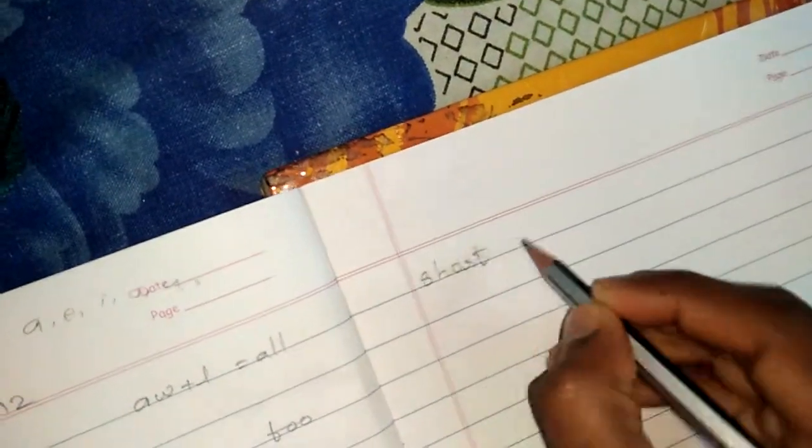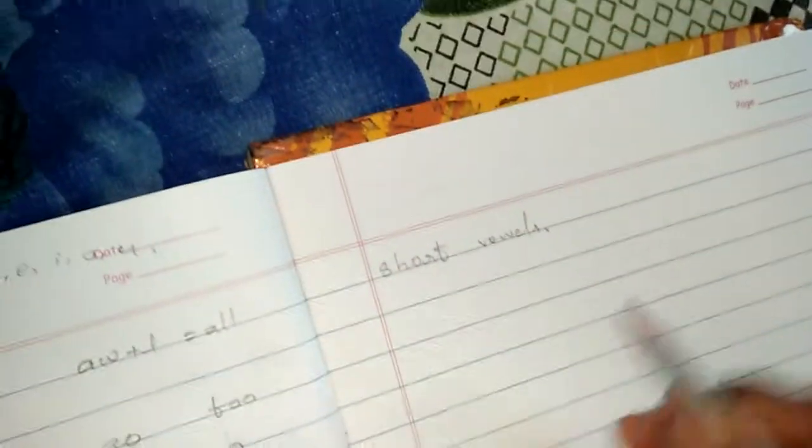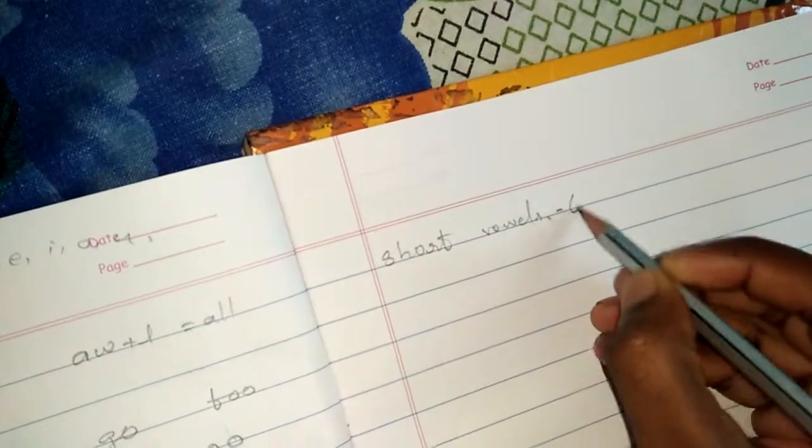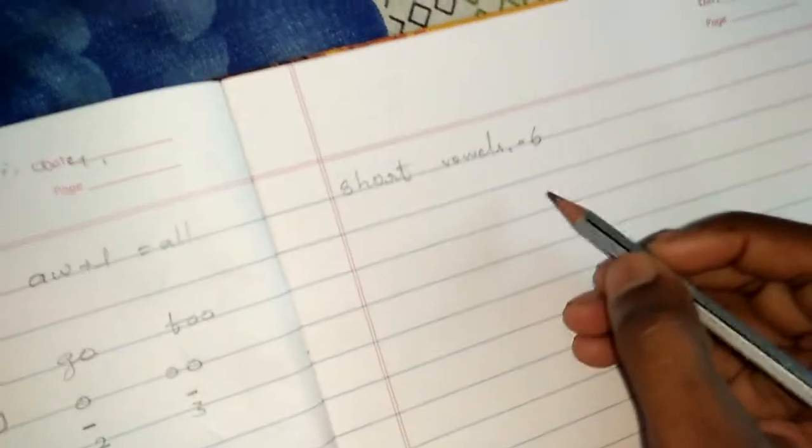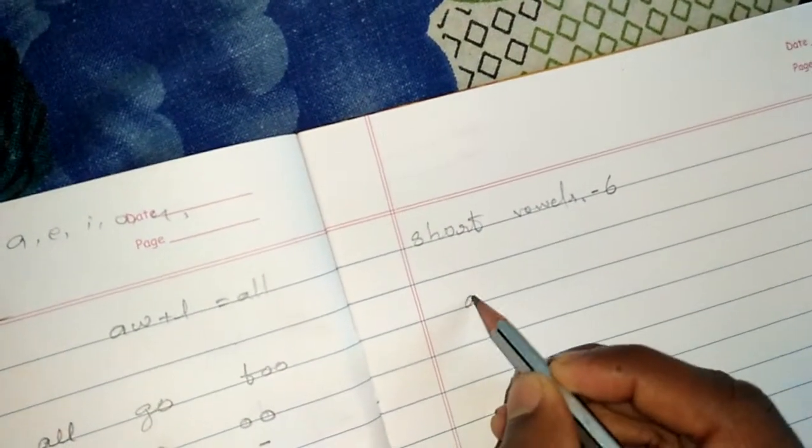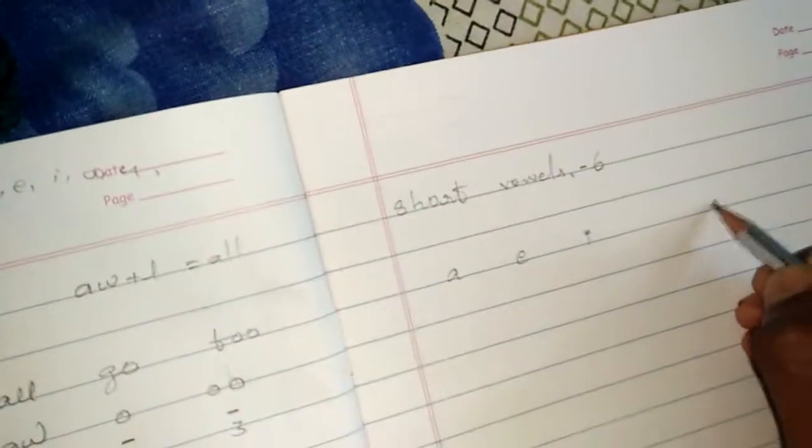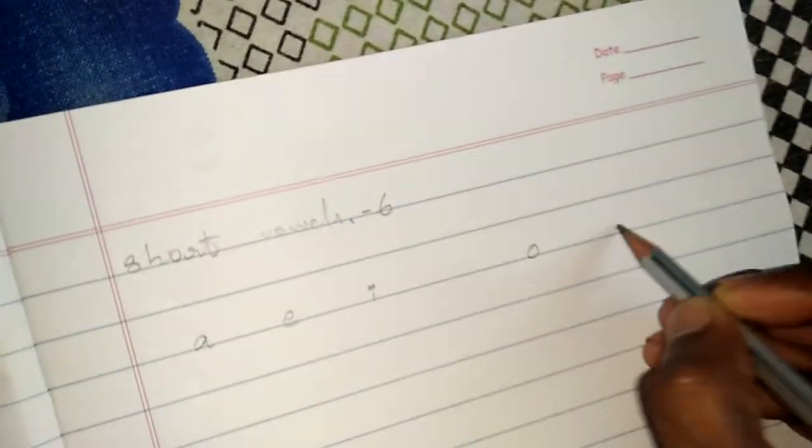Okay, last video was on long bubbles. This video is on short bubbles. Short bubbles portfolio. Six short vowels, also six long vowels, total of 12 bubbles.